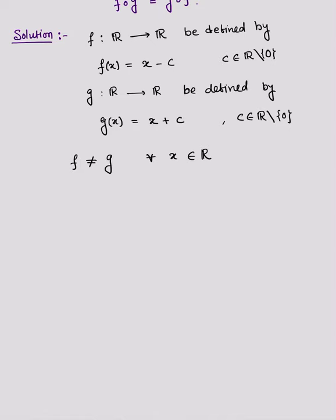Now we show that their compositions are equal. So first, let's find f composition g of x. It will be f of g(x), and this is f of (x + c), which equals x + c - c, and it will give x only.